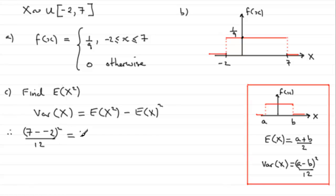It equals E of X squared minus E of X, the mean, all squared. Well, E of X is going to be minus 2 plus 7 divided by 2, or you could do it as 7 minus 2 all divided by 2. And that is squared.